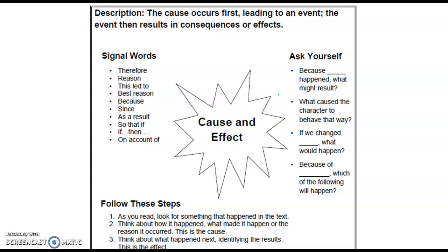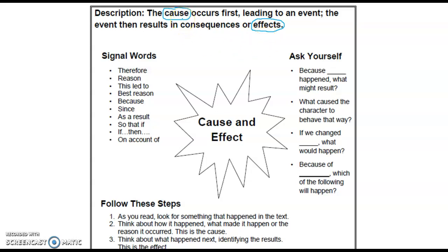The cause occurs first and it leads to an event. The event then results in consequences or effects. For example, if you came home from the bus stop soaking wet, that was the effect of it raining on your walk home. Things happen because of other things, and a lot of times your effect becomes a cause for something else. Maybe it was raining and that caused you to be all wet—so then you had to change your clothes. Being wet becomes your cause. Events trigger other events to happen.